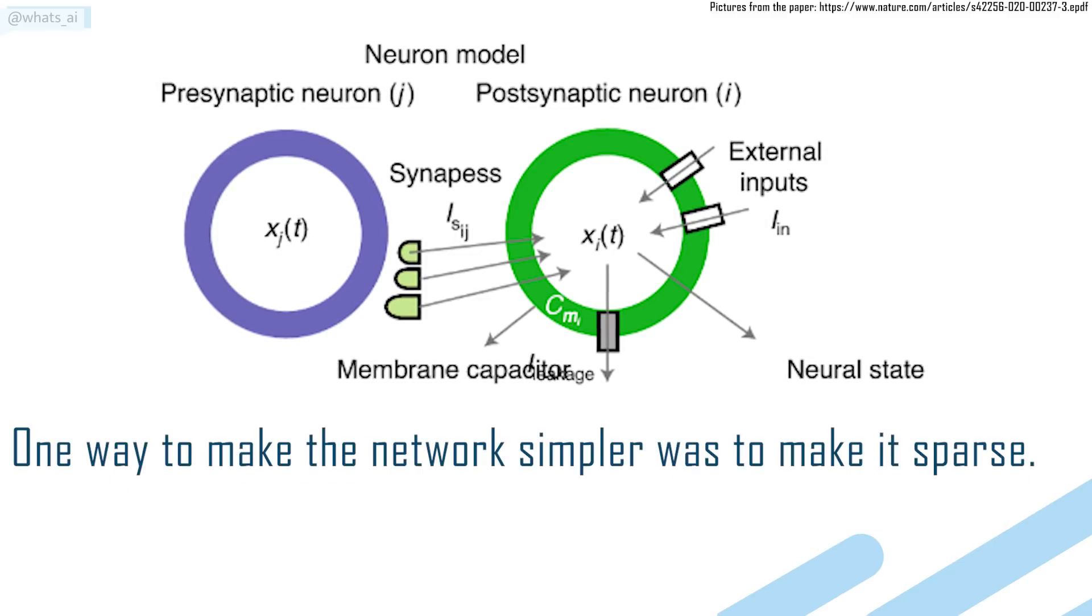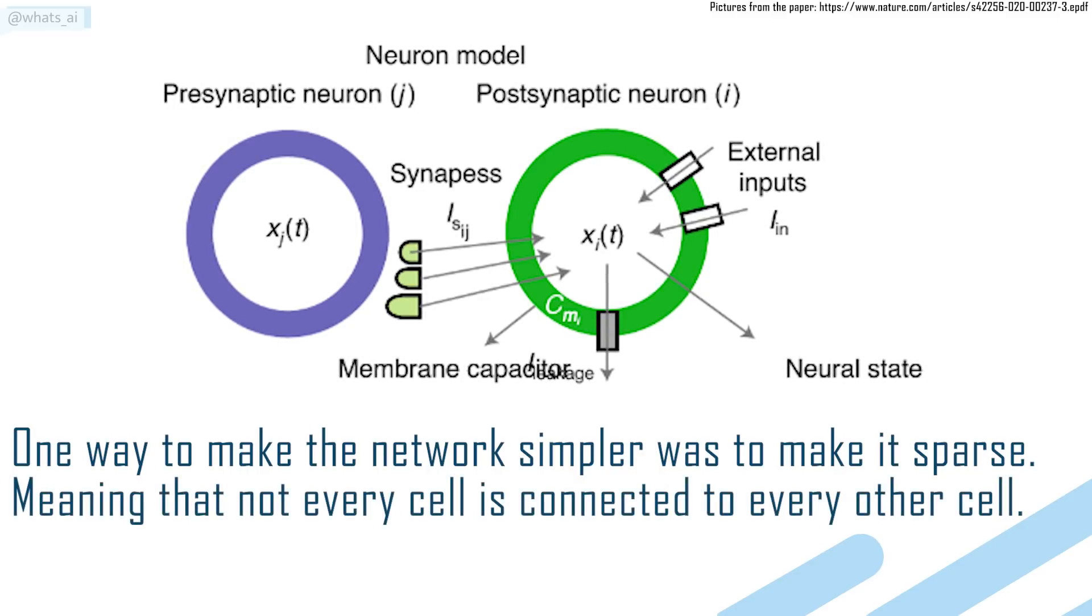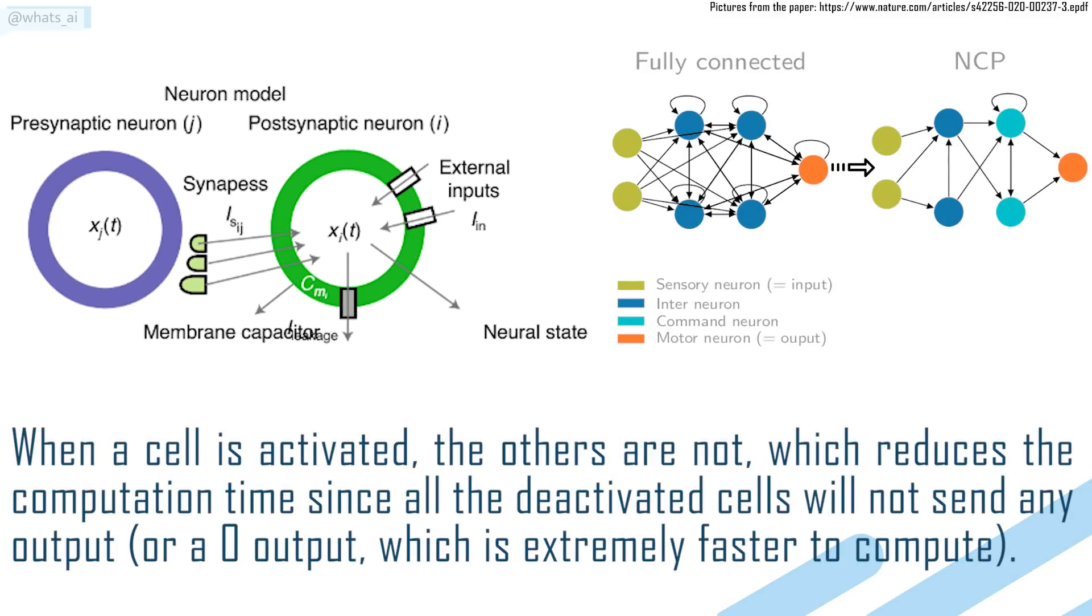One way to make the network simpler was to make it sparse, meaning that not every cell is connected to every other cell. When a cell is activated, the others are not, which reduces the computation time since all the deactivated cells will not send any output, or a zero output, which is extremely faster to compute.